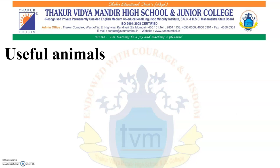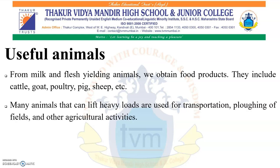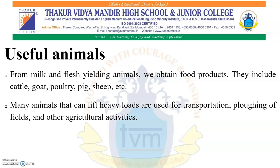Now let us see the useful animals. From milk and flesh-yielding animals we obtain food products — they include cattle, goat, poultry, pig, sheep, etc. Many animals that can lift heavy loads are used for transportation, ploughing of fields, and other agricultural activities. The fiber and skin of animals like sheep, goat, cattle, camel, etc. are used for making products like thread, woolen clothes, purses, belts, etc.